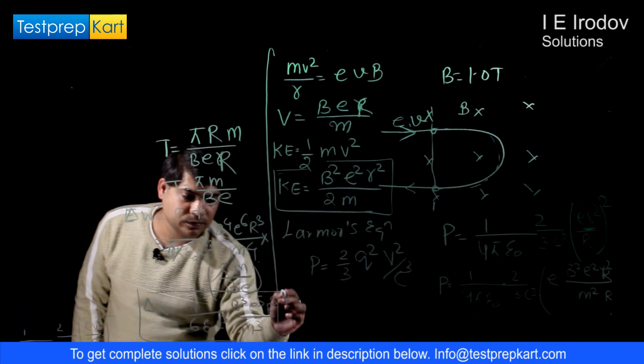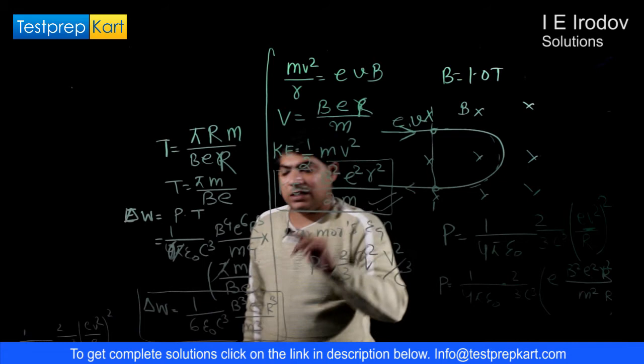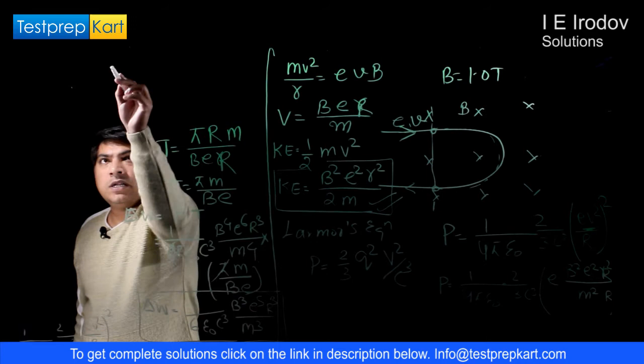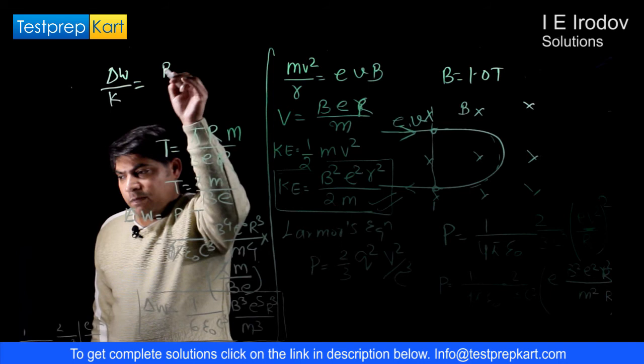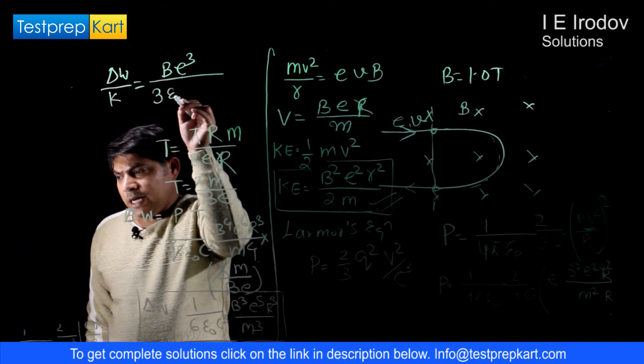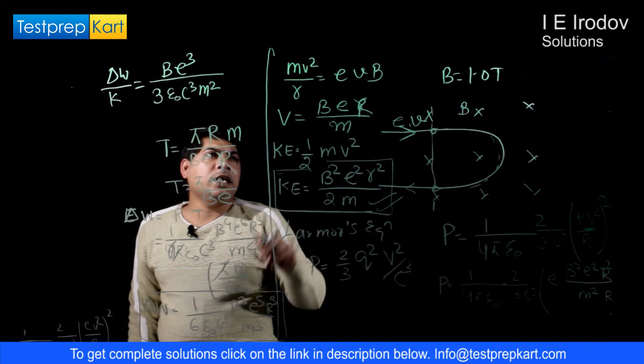And we already calculated the initial power in this system. So if we will just divide these two expressions, ΔE upon initial kinetic energy, then we will get Be³/(3ε₀c³m²). B is 1 Tesla already given.